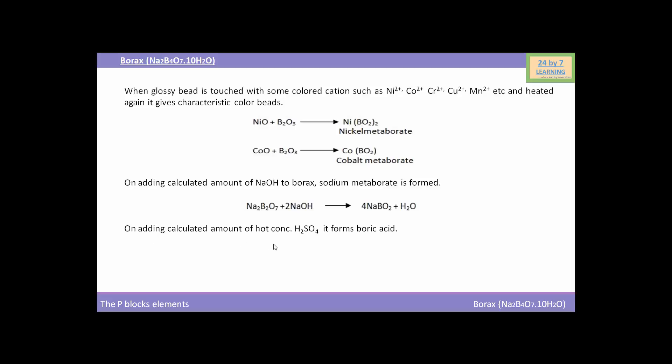And on adding calculated amount of hot concentrated H2SO4, i.e. sulfuric acid, it forms boric acid. Here are the reactions showing this. You can see Na2B4O7, i.e. borax, when will react with H2SO4, i.e. sulfuric acid, then it will give Na2SO4, i.e. sodium sulfate, and H2B4O7 which on further hydrolysis will form H3BO3, i.e. orthoboric acid.